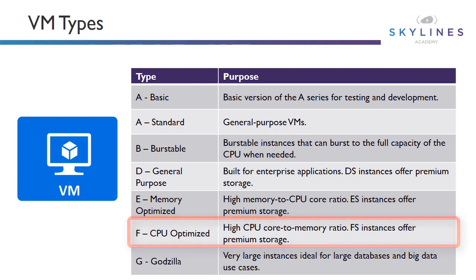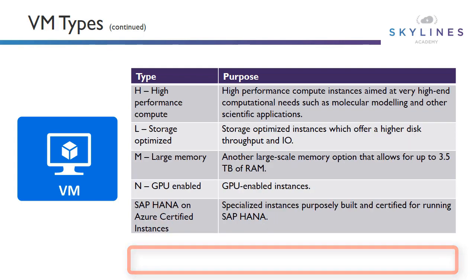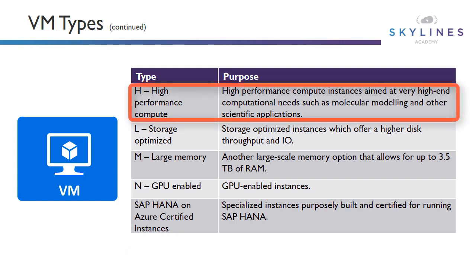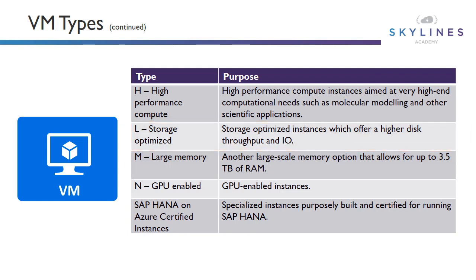The G series Microsoft calls the Godzilla — at least that's what people say walking around Microsoft Ignite. These are very large instances, hence the Godzilla name, used for large databases and big data use cases. Then we've got high-performance compute — the H series — for computational workloads, molecular modeling, and scientific applications. The L series is for storage; I remember this as L for LUN in the traditional sense of storage. These are storage-optimized with high disk throughput and high I/O.